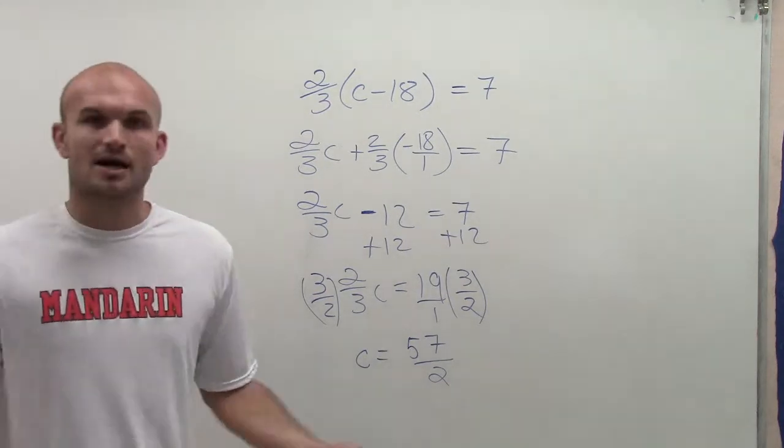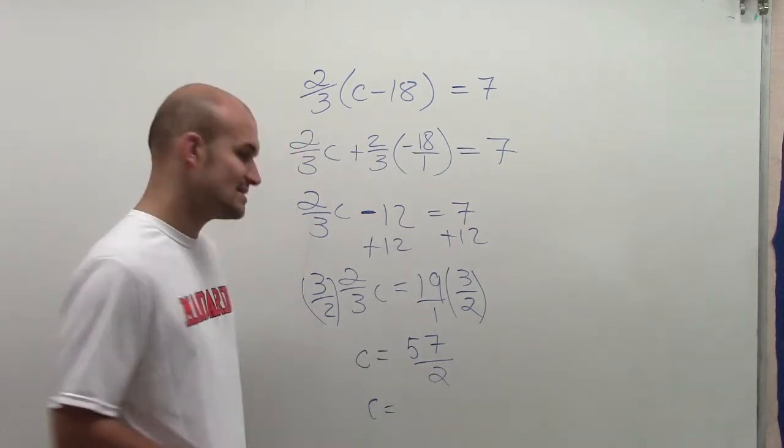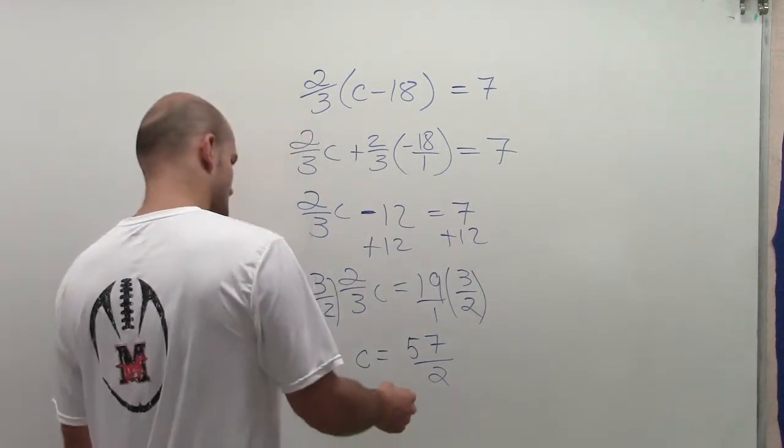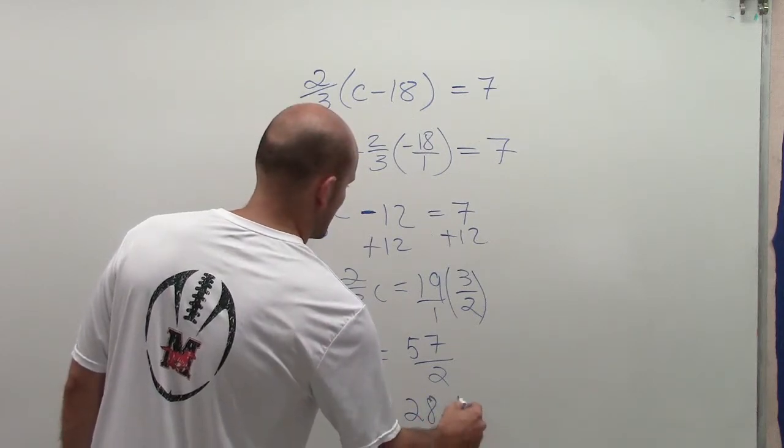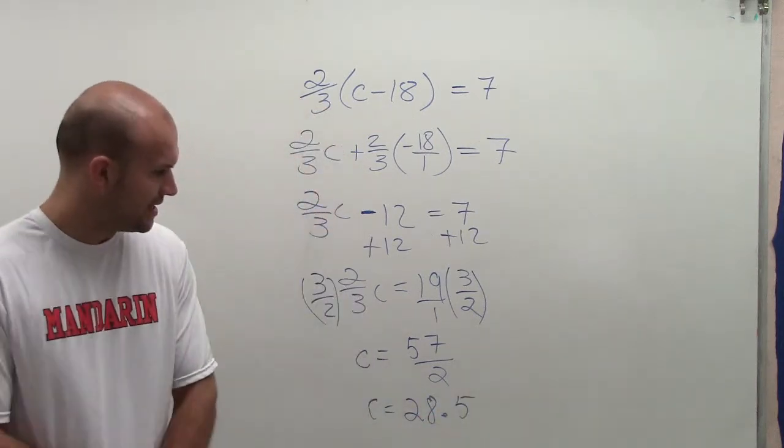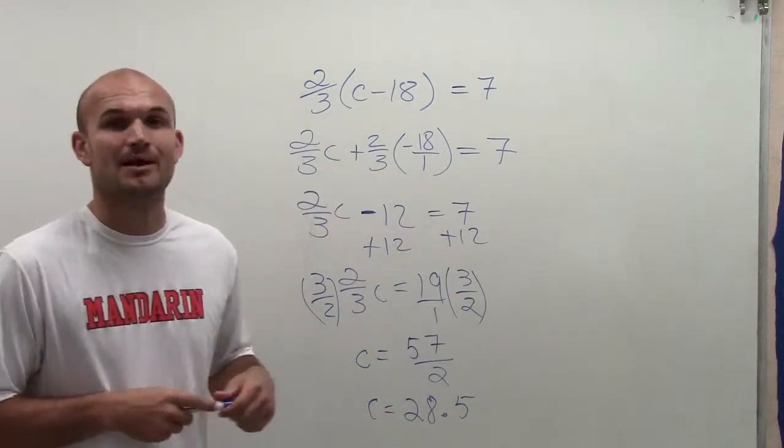However, if it's something that you're like, oh, you know, I want to see exactly what it is, you can obviously always leave it as a decimal form. So I have 28.5 would be the decimal form for that. So there you go, that's how you solve the problem. Thanks.